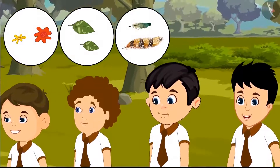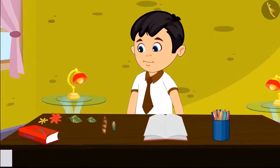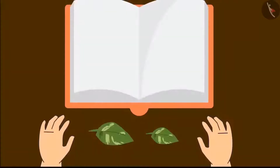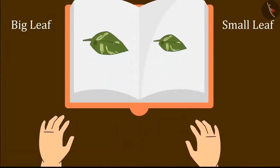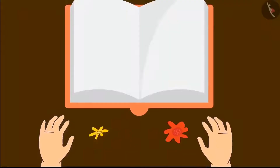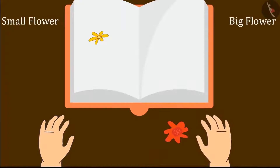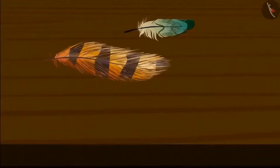When Chotu reached home, he took out his notebook and brought everything to stick in it. First he pasted the leaves — the big leaf here and the small leaf here. Chotu pasted both the leaves. Then he thought of pasting the flowers — the small flower here and the big flower here. Now it was the turn of the bird's feathers, and here are the two feathers.